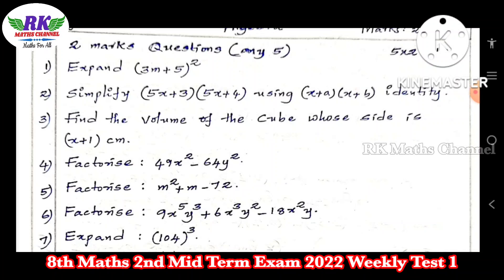Question number 3: Find the volume of the cube whose side is (x + 1) centimeter. One cube on the side is x + 1. See the volume of the cube. A³ is a cube. You will use (x + 1)³. Then we use the a + b whole cube formula. If you have a cubic identity, that is not a problem.